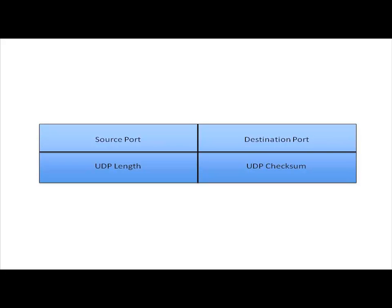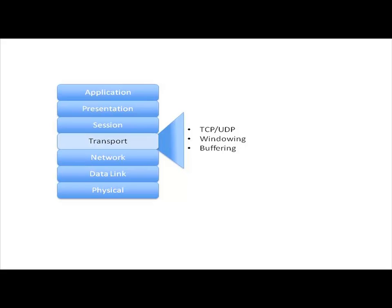So those are TCP and UDP, two of our most popular protocols up at layer 4. And we've already discussed what windowing is, and that leaves buffering.